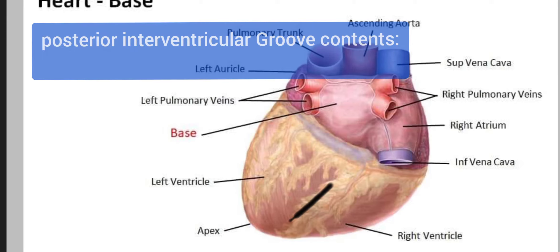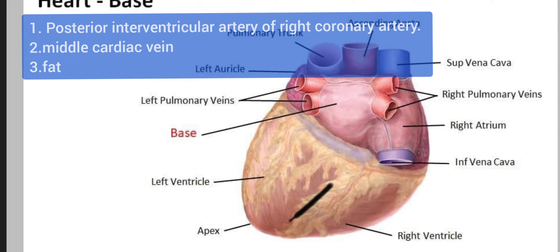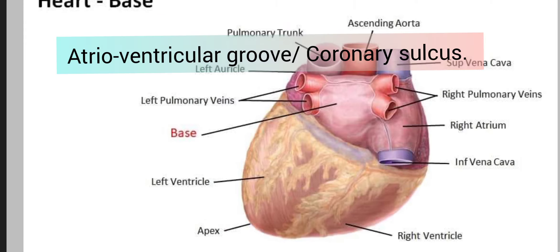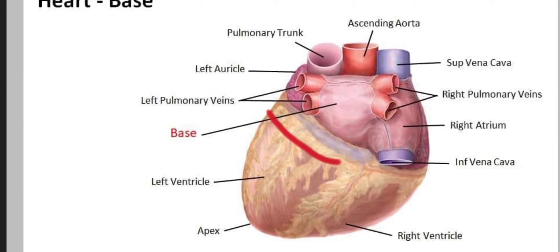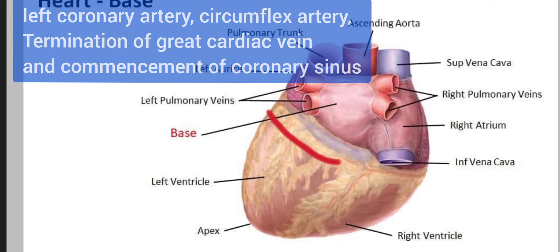In the posterior part, we have the posterior interventricular groove, which contains the posterior interventricular artery of the right coronary artery, the middle cardiac vein, and similarly a layer of fat. We also have the atrioventricular groove. In the right portion, we have the trunk of the right coronary artery, and in the left part we have the left coronary artery circumflex artery, termination of the great cardiac vein, and commencement of the coronary sinus.